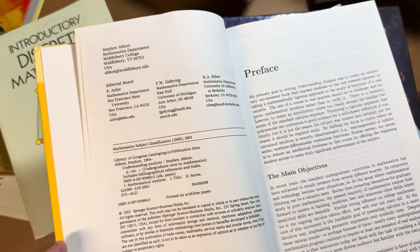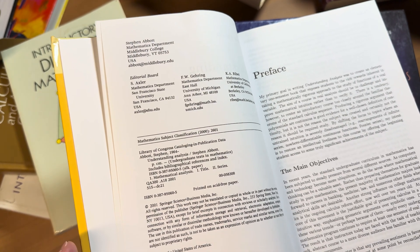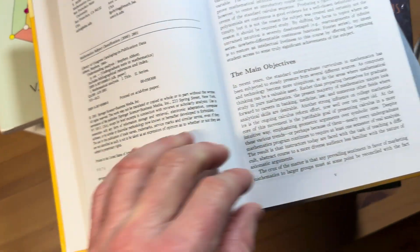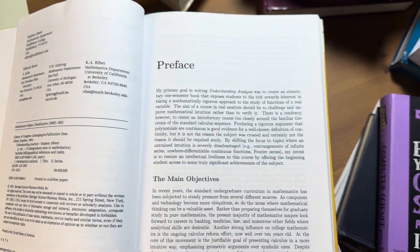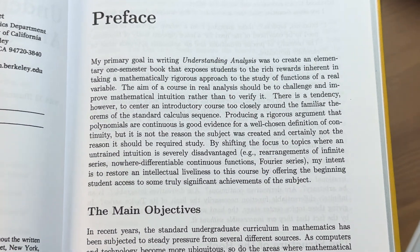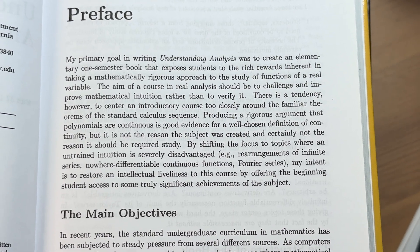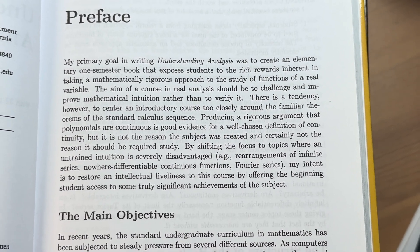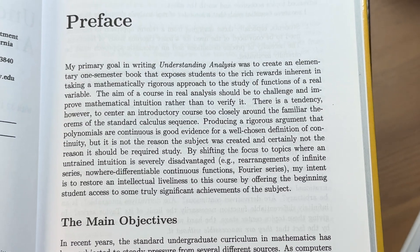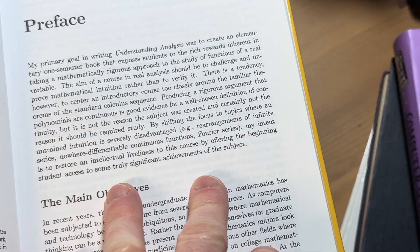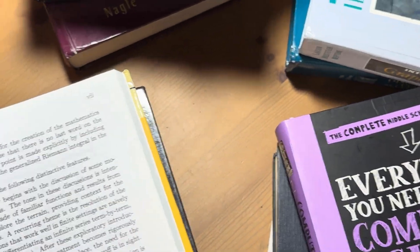And look at the copyright. I believe it's like 2000, 2001. There it is, 2001. Here's the preface. My primary goal in writing Understanding Analysis was to create an elementary one-semester book that exposes students to the rich rewards inherent in taking a mathematically rigorous approach to the study of functions of a real variable. And he picks specific topics.